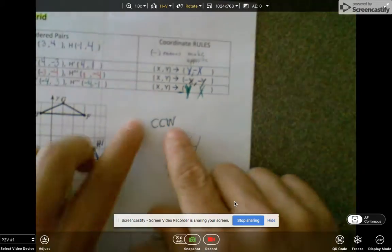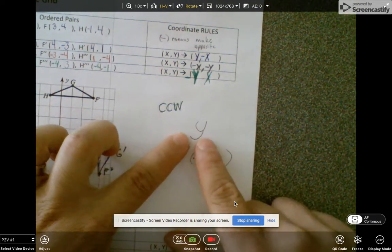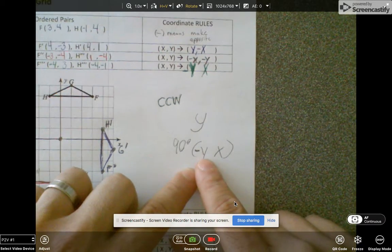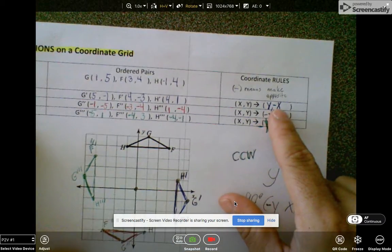So again, the trick to remember: counterclockwise, the two C's can make a Y if you really stretch it to look like that, so you make your Y's opposite. If it's clockwise, you just make your X's opposite.